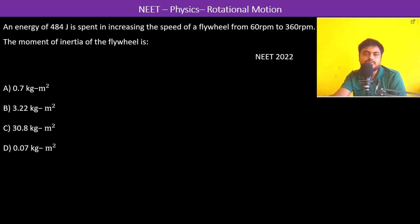Energy of 484 joules is spent in increasing the speed of a flywheel from 60 rpm to 360 rpm. The moment of inertia of the flywheel is: So kinetic energy is going to be half into I omega square.